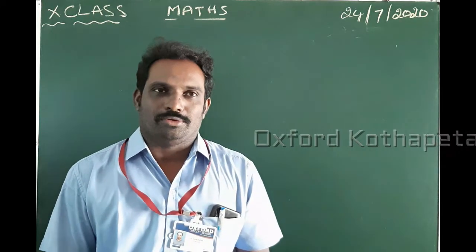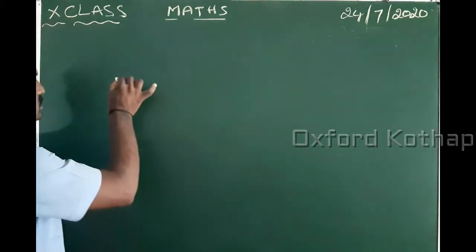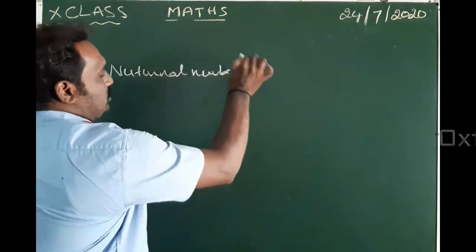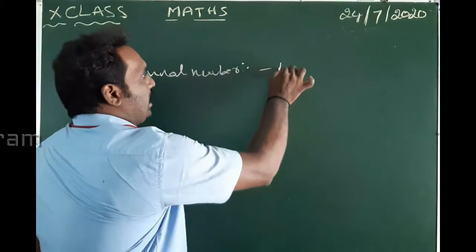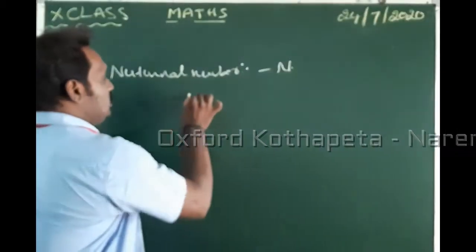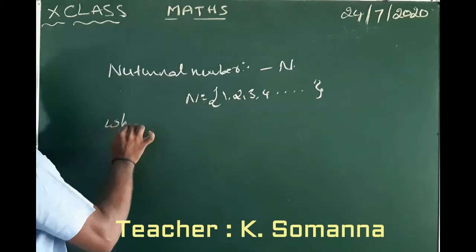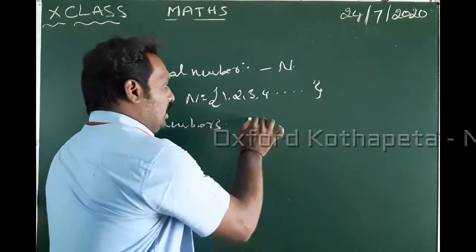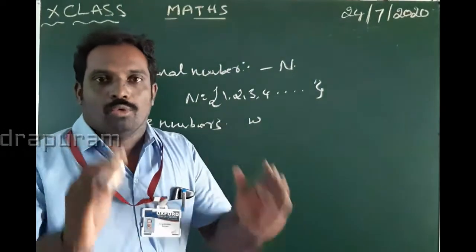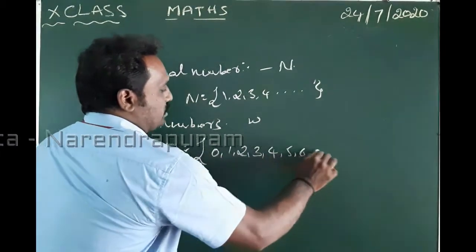Hi children, how are you? Today we have 10th class Maths. First, natural numbers — the counting numbers, which start with one, are denoted by N. N = {1, 2, 3, 4, ...} and so on. Next, whole numbers are denoted by W. Natural numbers plus zero are included here. W = {0, 1, 2, 3, 4, 5, 6, ...} and so on.